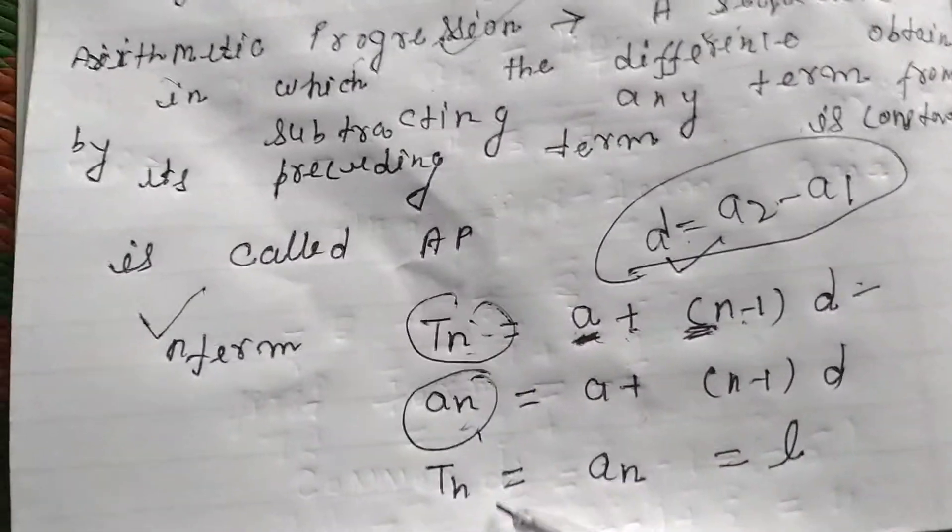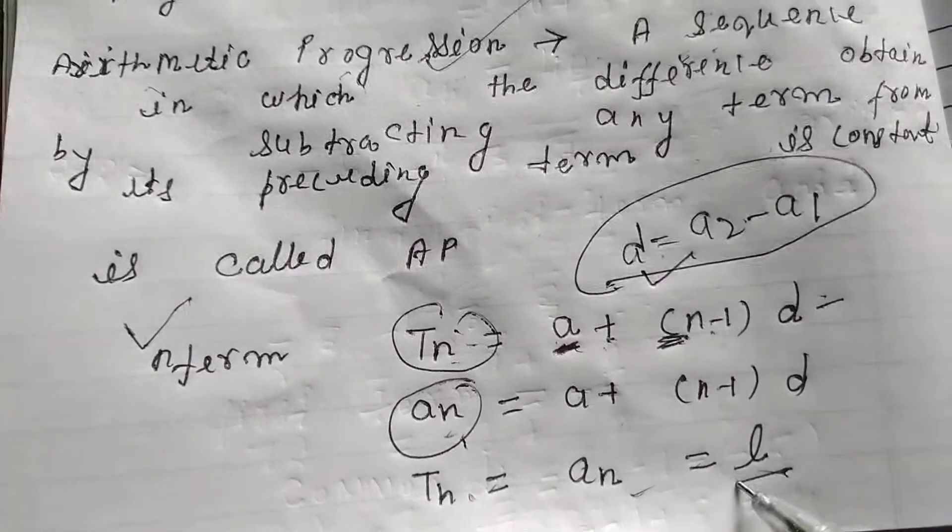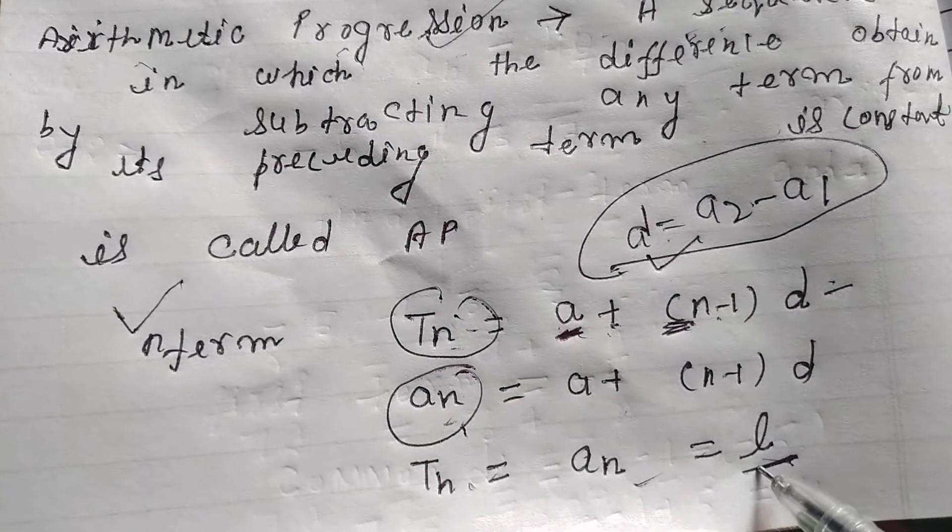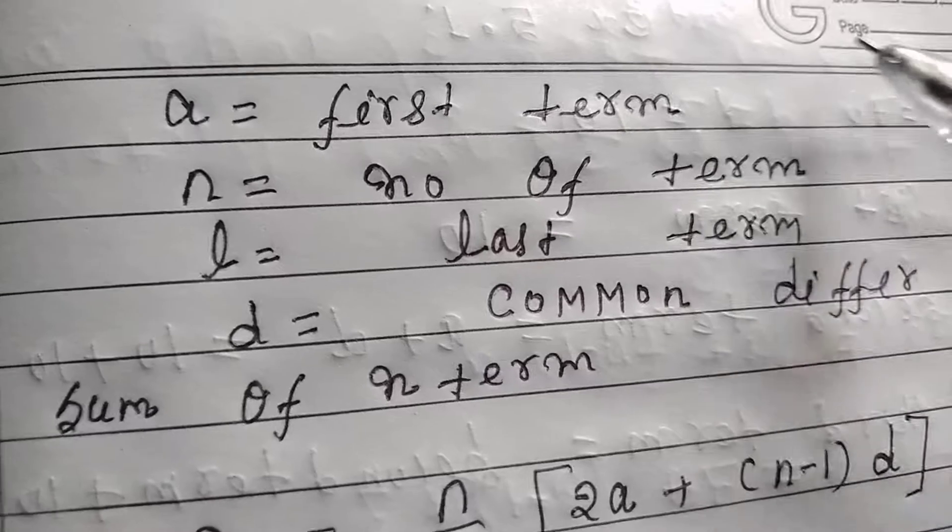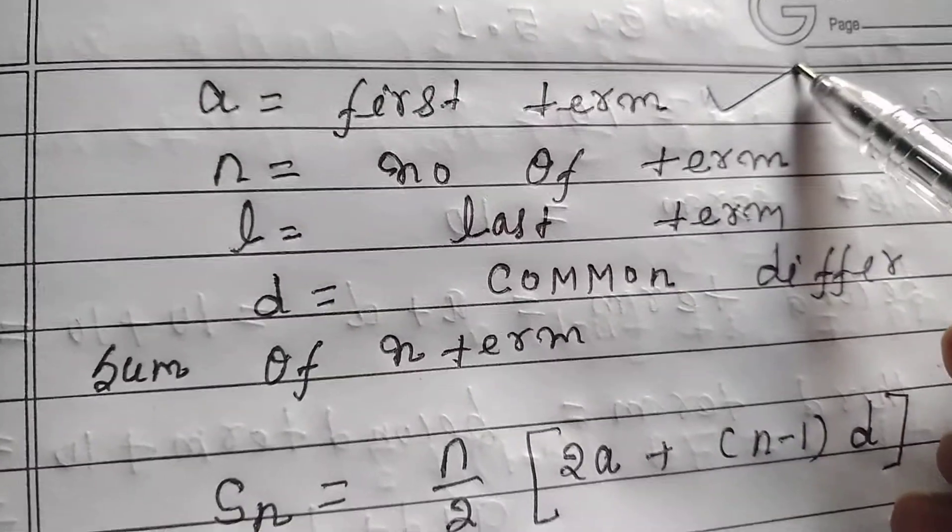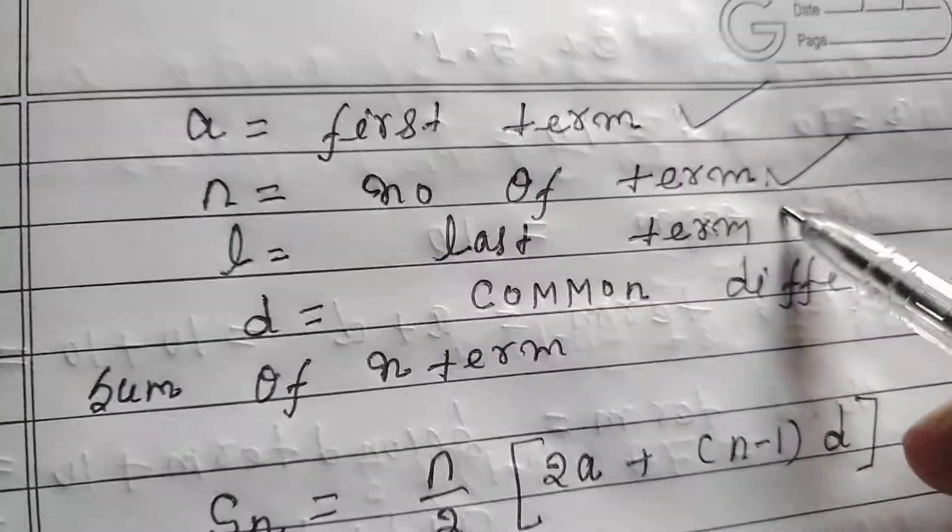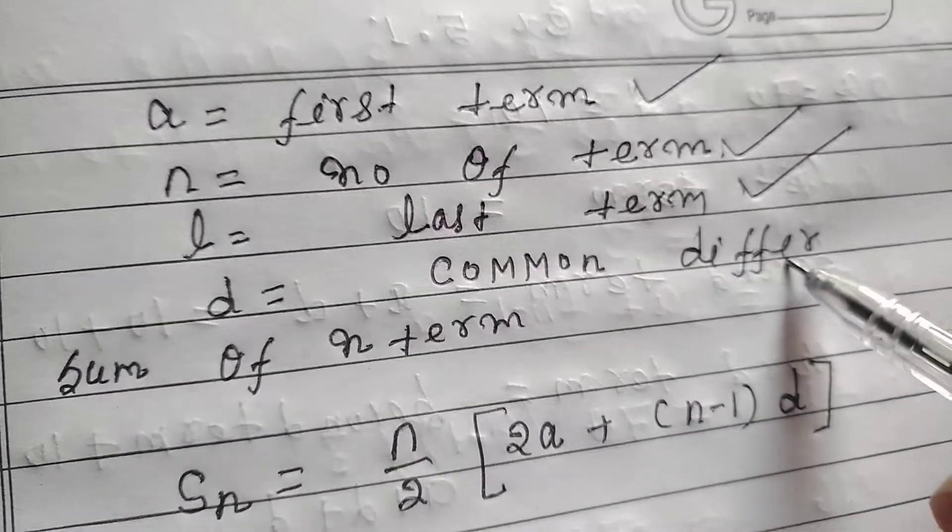Tn equals an, which equals the last term. We can say first term, we can say number of terms, and last term. And d, how to find?